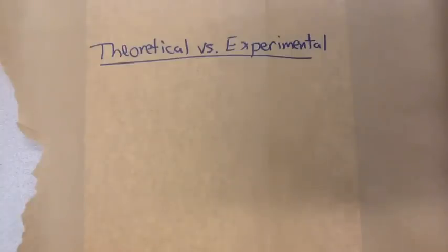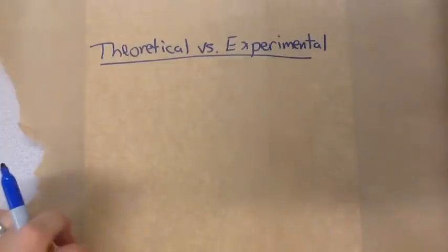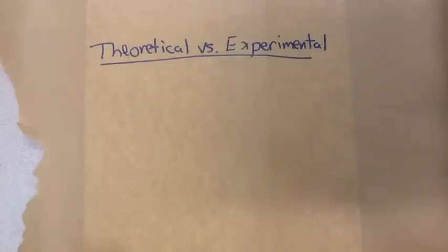Let's look at the difference between theoretical and experimental probability. Theoretical probability is the number of times an event can occur divided by the total number of outcomes. Experimental probability is what actually occurs when we collect that data.